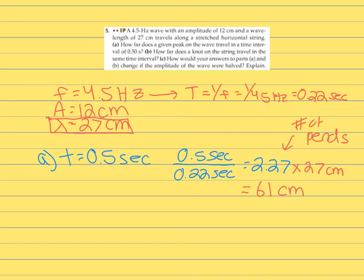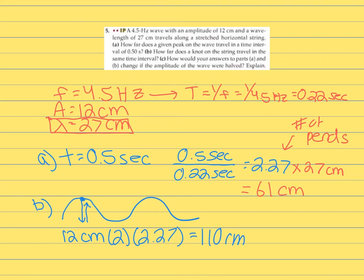Okay. So let's do part B here. So if I tie a knot on the string, how far does it travel in the same interval? So if I draw a wave right here, and this is moving across, this wave is actually just going up and down. Okay. So all I need to do is look at my amplitude. So I have 12 centimeters. Okay. And it's going up and down. So I am just multiplying this by 2. And then I'm going to multiply it by the number of periods. Okay. So I'm going to get 1100 centimeters. Okay. That's also equal to 1.1 meters.